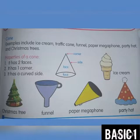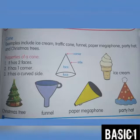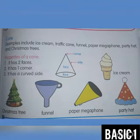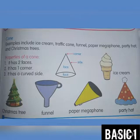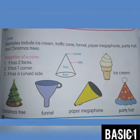Let's look at the next shape — a cone. Look at the properties of a cone. A cone has two faces. It has one corner. And it has a curved side. Examples of objects that have a cone shape include those of you that like taking ice cream in a cone shape. We also have a party hat, a funnel, a Christmas tree, and a paper megaphone. These are examples of objects with a cone shape.